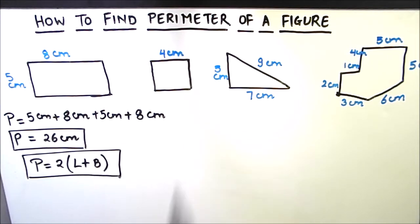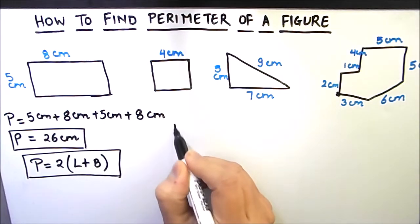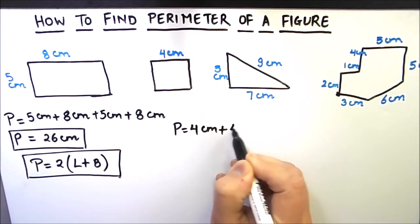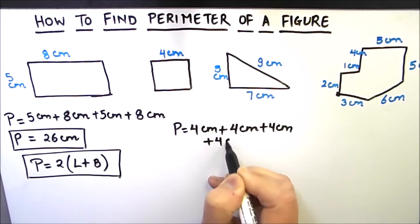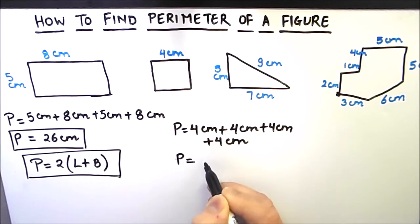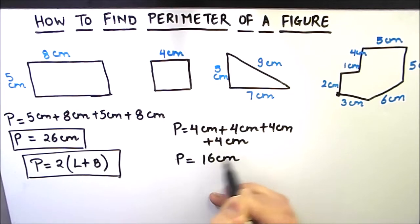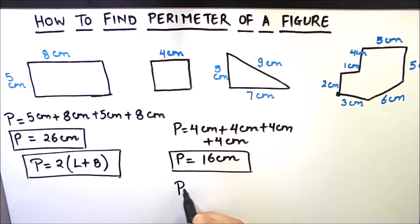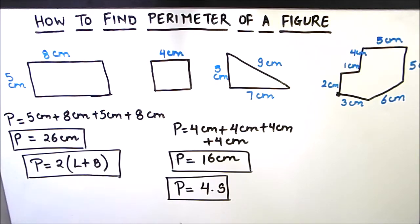Now let us find the perimeter of the next figure, which is a square. A square has all sides equal. We add 4 centimeters four times to get the perimeter, which is 16 centimeters. The formula for finding the perimeter of a square is 4s, where s is the length of the side.